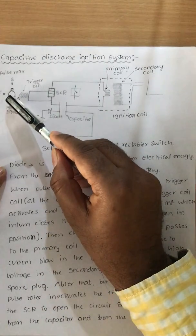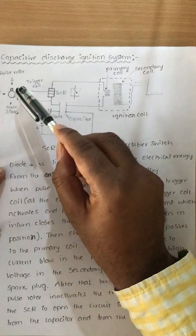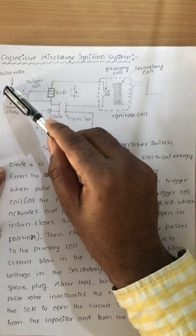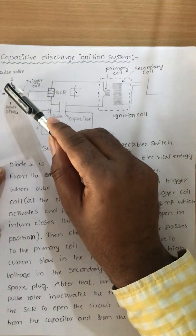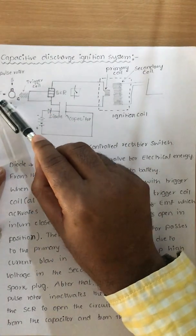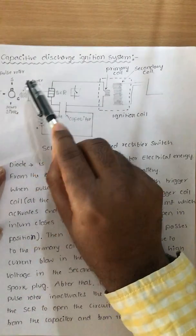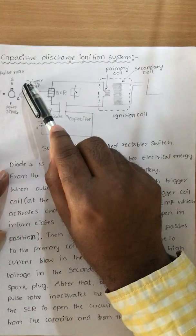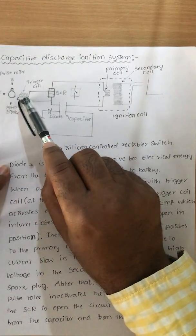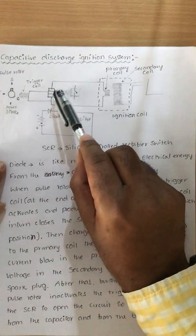The pulse rotor is connected to the camshaft, so it also rotates. When the pulse rotor rotates, it has a profile point. The moment that profile aligns with the trigger coil, the trigger coil activates. When the trigger coil activates, it produces a small EMF, which is supplied to the SCR, causing the SCR to close.